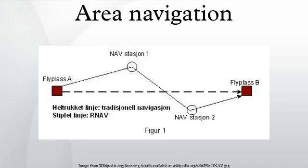An RNAV specification is designated as RNAV X — for example, RNAV 1. The expression X refers to the lateral navigation accuracy in nautical miles, which is expected to be achieved at least 95% of the flight time by the population of aircraft operating within the airspace, route or procedure. There are no RNAV approach specifications. Manual or automated notification of an aircraft's qualification to operate along an air traffic services route, on a procedure or in an airspace, is provided to ATC via the flight plan. Flight plan procedures are specified in appropriate ICAO documents.